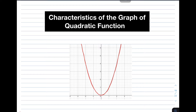So we need to know the different parts. Basically, we need to know the vertex, axis of symmetry, opening, intercepts, and then the domain and range of the graph. So without further ado, let's do this topic.